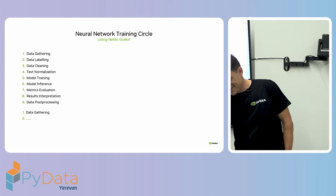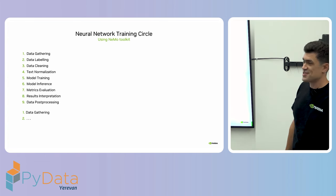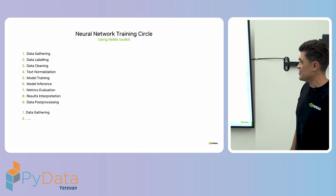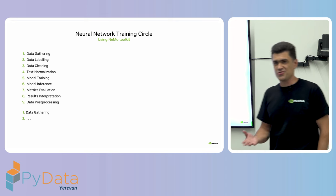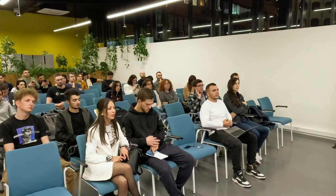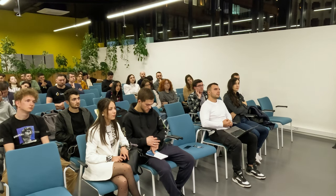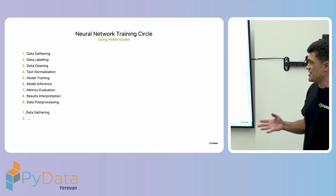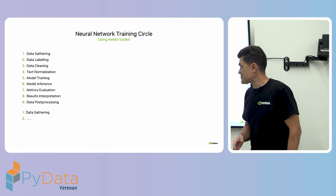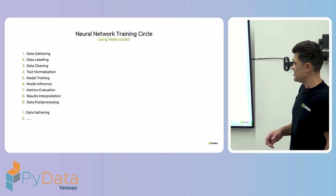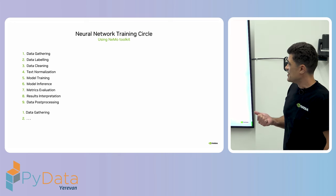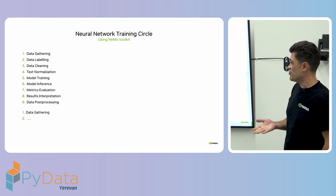The training cycle is what we usually do when we want to train our model. We need to get data — it comes from the open internet or maybe from your internal server logs. You take data, you need to label it, clean it, remove some trash and duplicates. Then if you have text, you usually do text normalization, which I'll talk about a bit later. Once it's done, you can do model training.